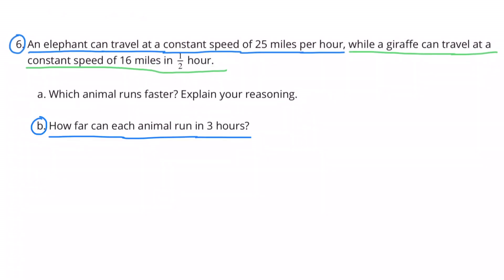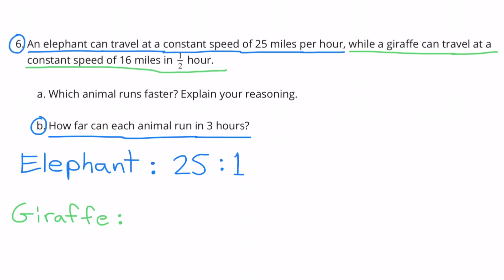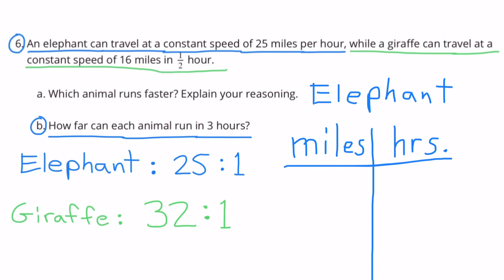6b. How far can each animal run in three hours? The rate that the elephant runs is twenty-five miles in one hour. And the rate that the giraffe runs is thirty-two miles in one hour. For the elephant, I'll make a chart with miles on the left side and hours on the right side.